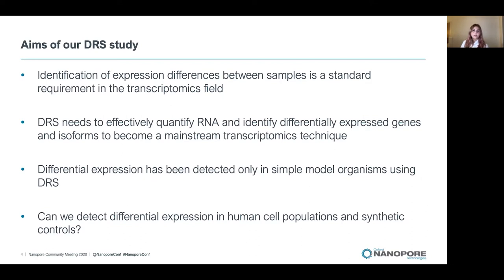Identifying differential expression of genes and transcripts between conditions is an important requirement in RNA sequencing generally. In order for direct RNA sequencing to become a mainstream technique for transcriptomics, we need to be able to use it to detect differential expression. So far this has been shown in simple model organisms such as yeast, so our aim was to test this technique's applicability to identify differential expression between human cell populations and also synthetic controls.